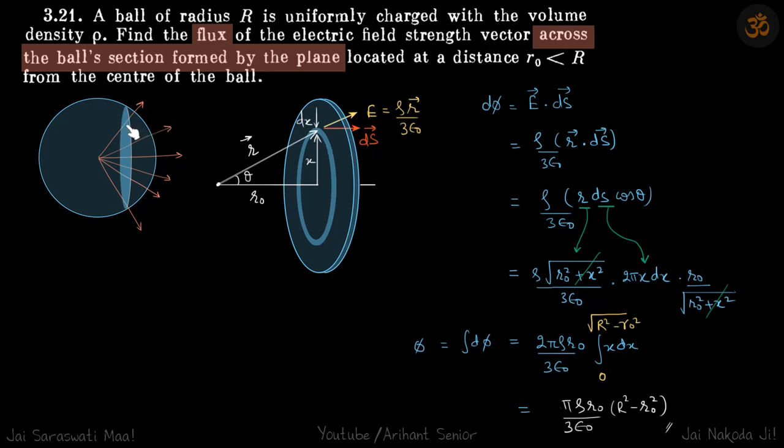This is the point of this ring. If this distance is R then the field here will be rho r by 3 epsilon. This is the field and ds vector for this ring will be towards right.